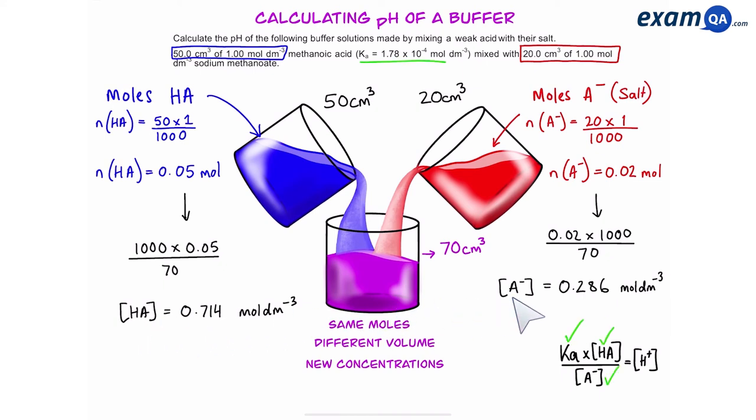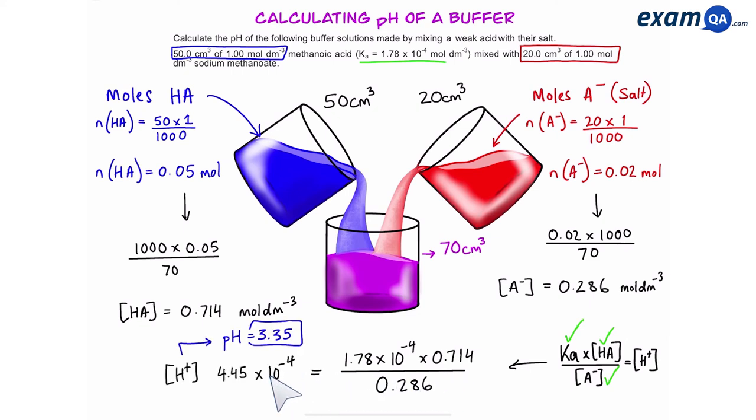So once you've done that you'll have the concentration of HA and A- in the buffer. So we've got everything we need to work out the concentration of H+. We're simply going to use our values into the formula and work out the value of H+ then minus log it and we'll get our pH.